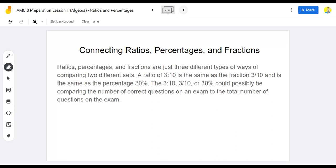Connecting ratios, percentages, and fractions. Ratios, percentages, and fractions are just three different types of ways of comparing two different sets. A ratio of 3 to 10 is the same as the fraction 3/10, and is the same as the percentage 30%. The 3 to 10, 3/10, or 30% could possibly be comparing the number of correct questions on an exam to the total number of questions on the exam.